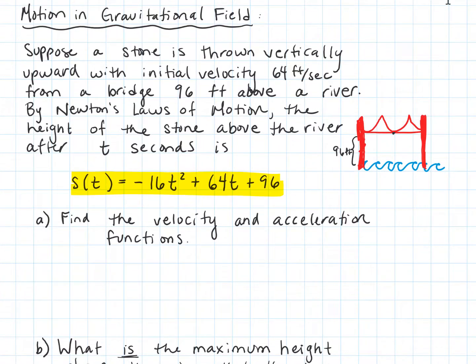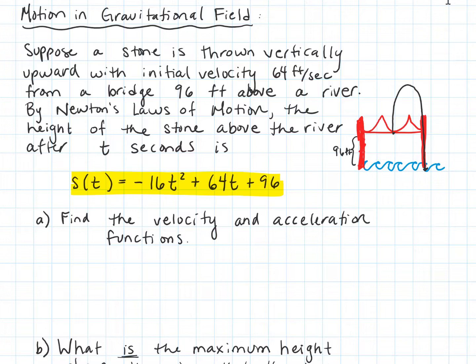Let's suppose that we throw a stone vertically upward with some initial velocity of 64 feet per second off of a bridge that is 96 feet above a river. Here we are standing on a bridge, we throw a stone off of the bridge, and it comes back down and hits the water. By Newton's laws of motion, the height of the stone above the river can be modeled by this function.